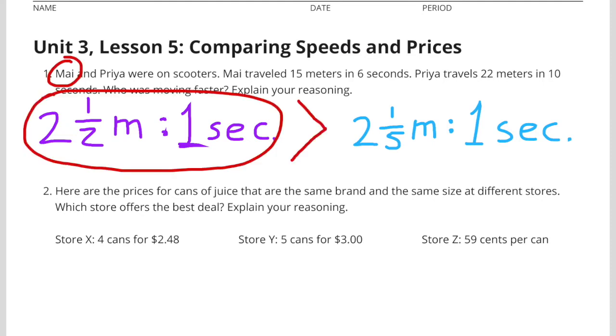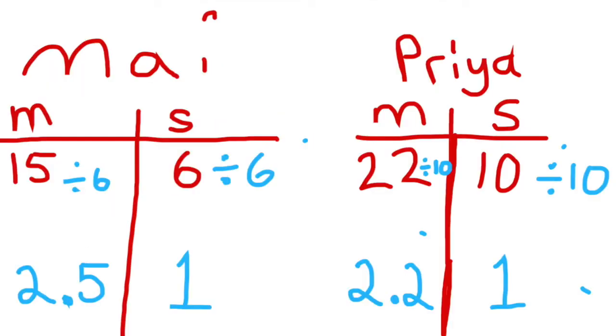Mai traveled 2 and a half meters per second, so that's faster. Mai traveled faster than Priya.